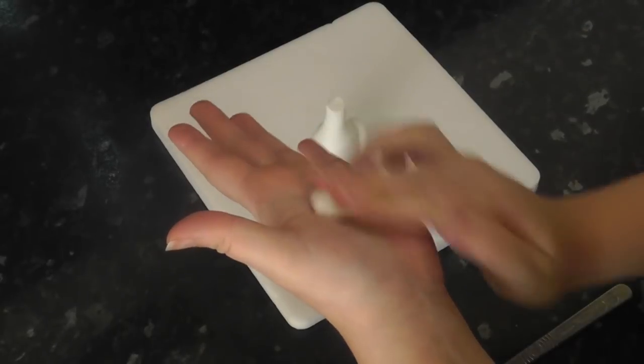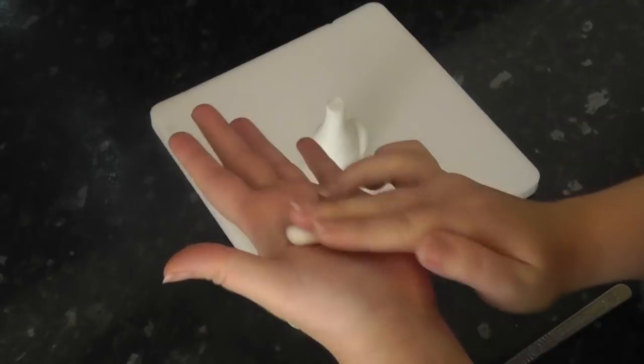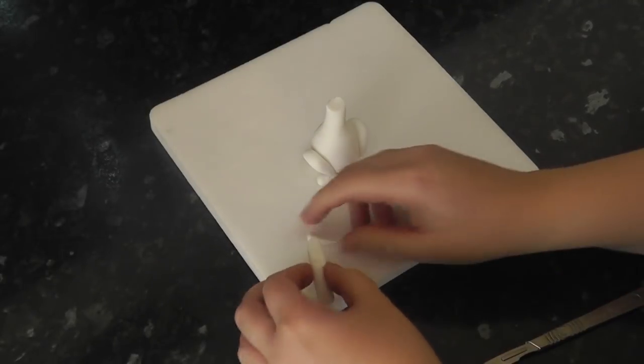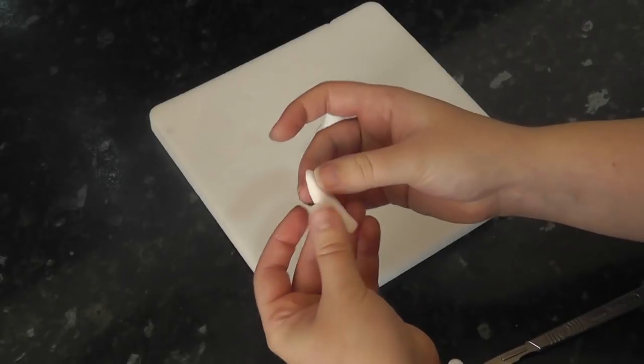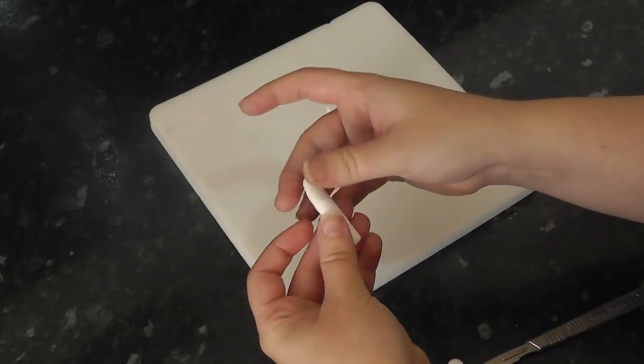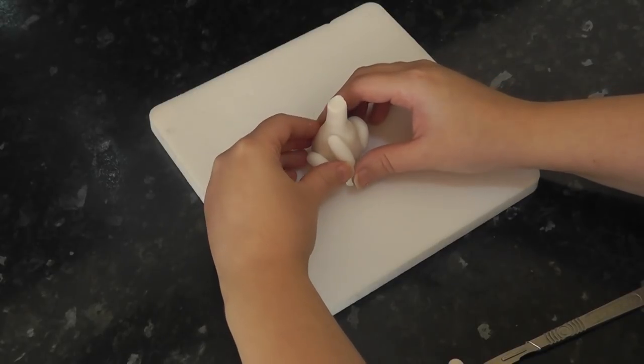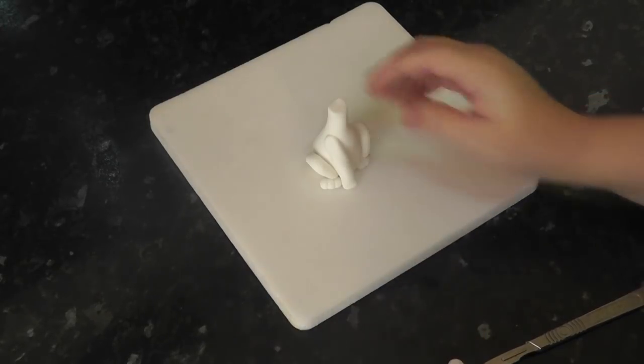The front legs start as sausages, with one end cut flat and the top sloped at an angle so it sits against the body. Press this to the front of the body, placing the sloped part at the top on the left and then meet the bases of the legs at the front.